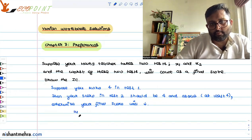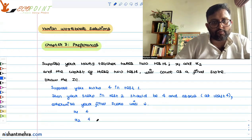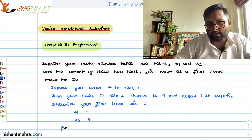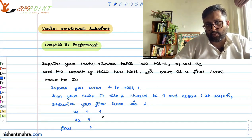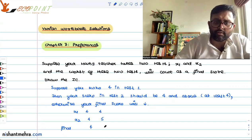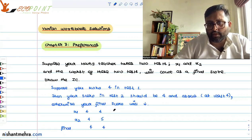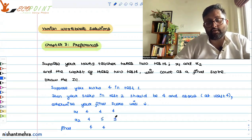Let's say x1 is 4 and x2 is also 4. The final score is minimum of x1, x2, which is 4. If x1 is 4 and x2 is 5, your score is still 4. But if x2 falls below 4, you have performed worse than your earlier test and your score is going to fall — you do not want that to happen.